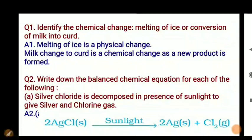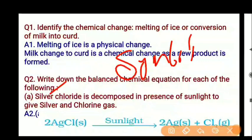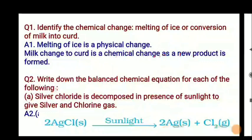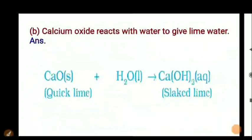Question 2: Write down the balanced chemical equation for each of the following. First, remember the symbol and valency — if you don't remember, go to your periodic table. Silver chloride is decomposed in the presence of sunlight: AgCl decomposes into 2Ag plus Cl2. Silver plus chloride — the reaction is balanced: 2AgCl gives 2Ag plus Cl2 in the presence of sunlight. Solutions will also be provided in the Telegram group via the link in the description.